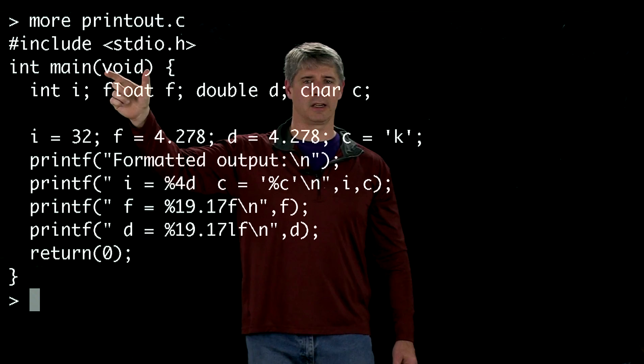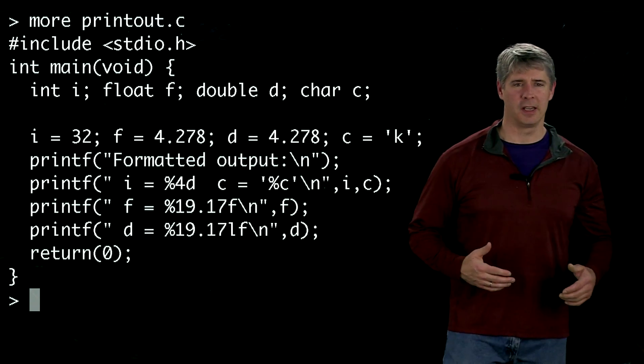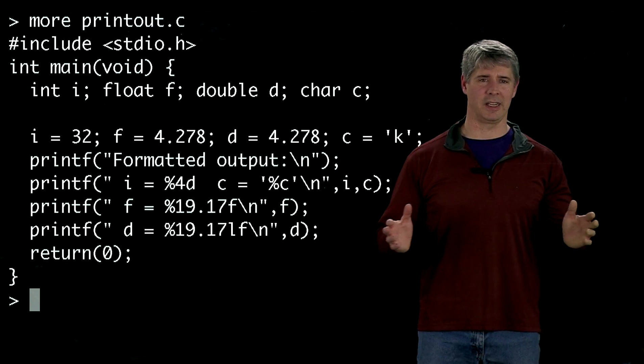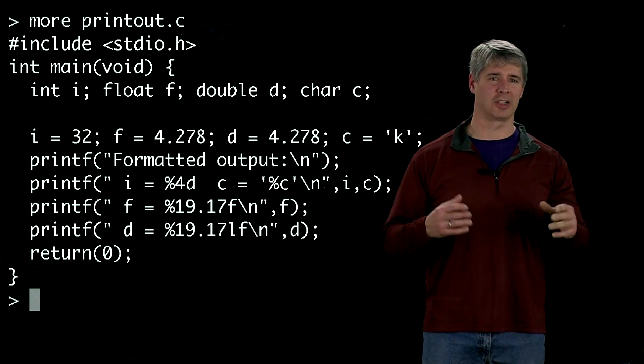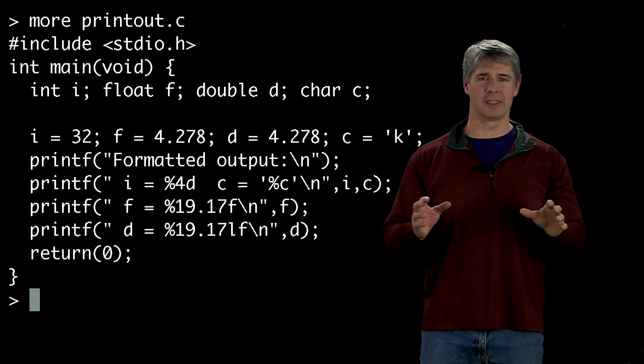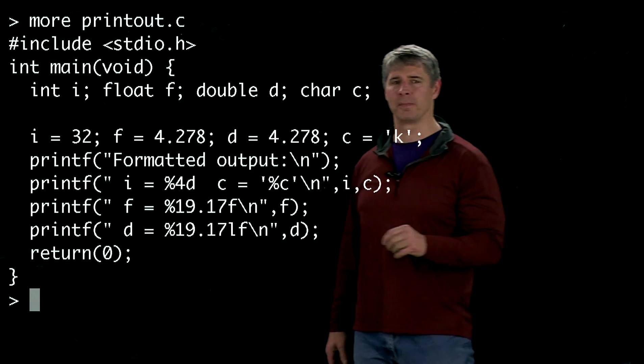So our function has the data type int. Every function can also take arguments, inputs to that function. In this case, main is not going to take any inputs, so we're going to write void there. Void is another data type, just like int and char are data types. Void means that we're not taking anything as arguments to this function.